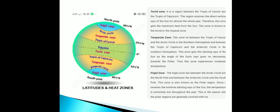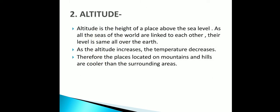The Frigid Zone lies between the Arctic Circle and the North Pole, and between the Antarctic Circle and the South Pole. This zone is also known as the polar region. Since it receives extremely slanting rays of the sun, the temperature is extremely low throughout the year. This is why the polar regions are generally covered with ice.